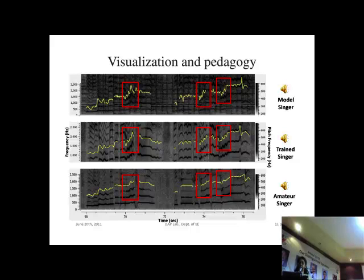Rhythm representation — as I already talked about — it's possible to do. The signal processing involved is all about detecting onsets, and especially if it's a percussive instrument, it is relatively easy to do. It's not so easy to do for the voice, but of course the melody already captures some of the rhythm.